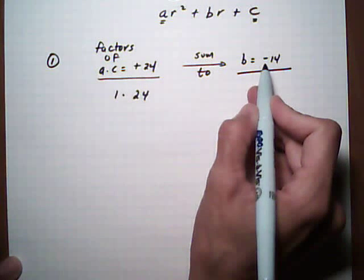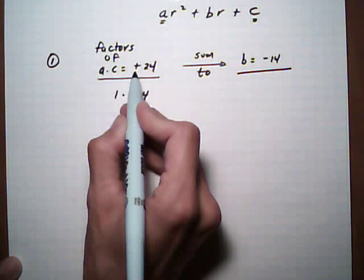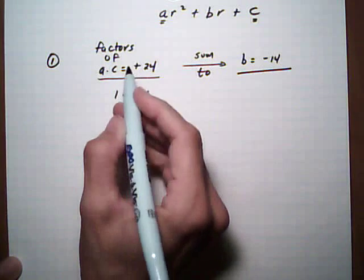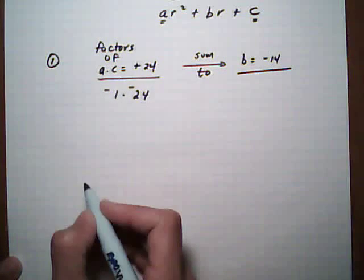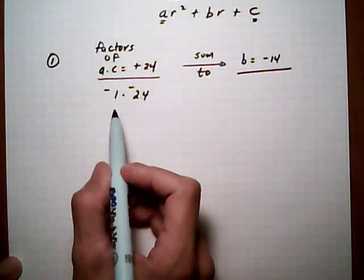We need it to be adding up to a negative number, but it has to be factors of positive 24. Positive means same signs. Give it two negatives because we need it to add up to be a negative.